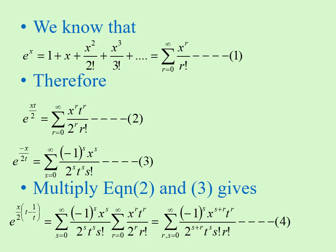We know that e power x is equal to 1 plus x plus x squared by 2 factorial plus x cube by 3 factorial plus so on. That we can write as summation r is equal to 0 to infinity, x power r divided by r factorial.